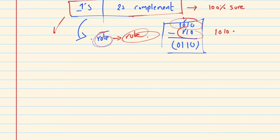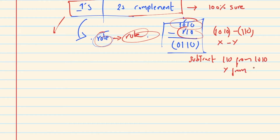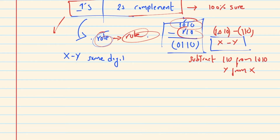The question is about binary subtraction. Suppose the table question is given: subtract 1 1 0 from 1 0 1 0 — that is, x minus y. We need to subtract y from x in binary.